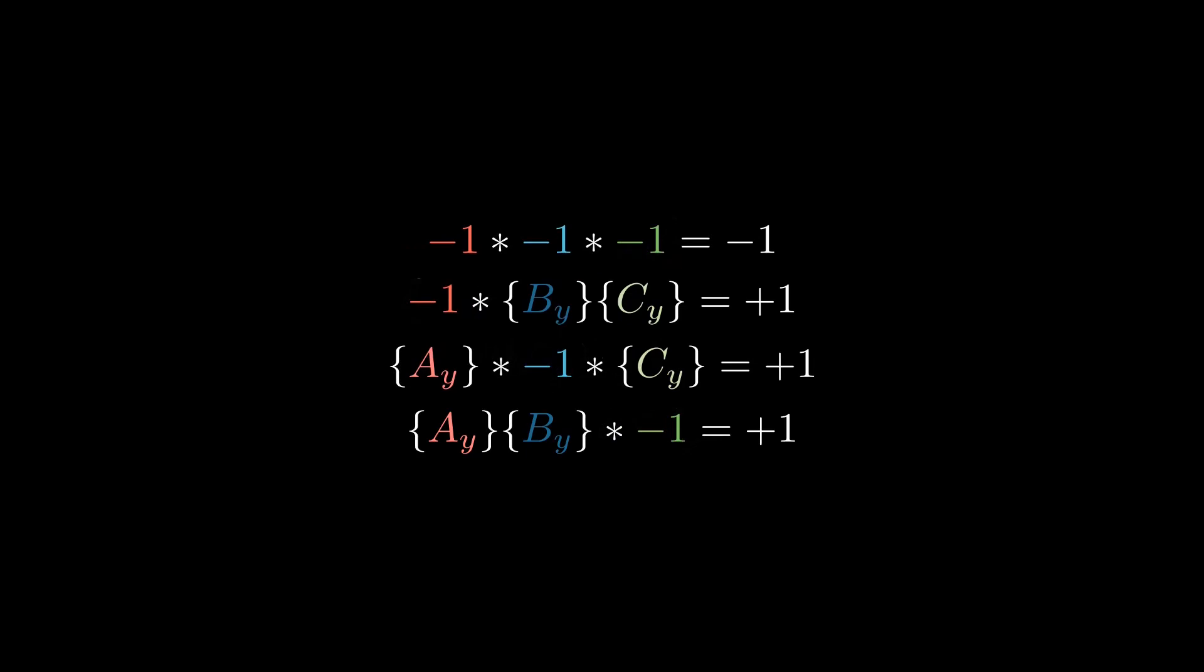To make equation two work out, that means that one of the variables has to be negative and the other has to be positive. So let's just say that BY is the negative one and CY is the positive one.